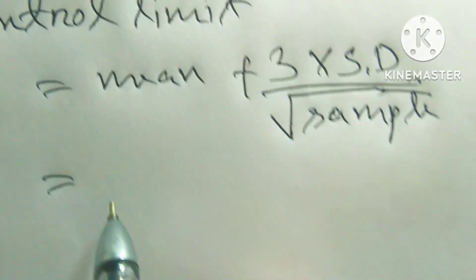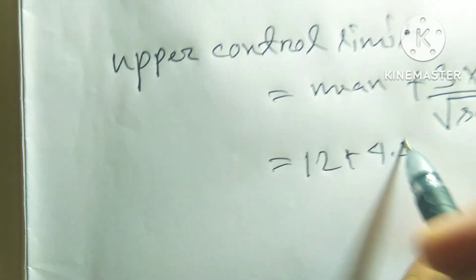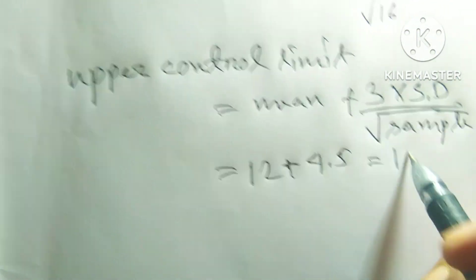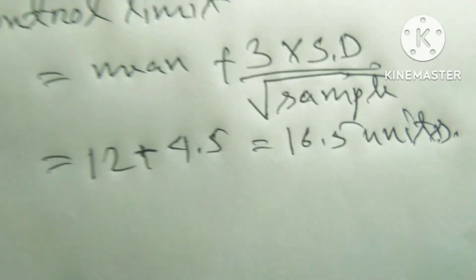Equals to mean equals to 12 plus 4.5 equals to 16.5 units. Thanks for watching.